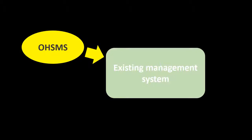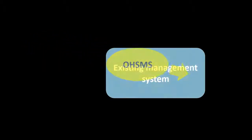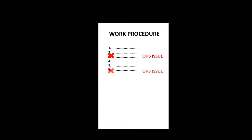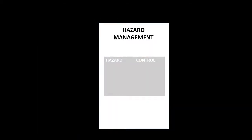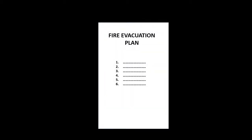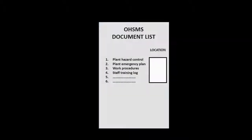The integration of an OHS management system into a company's existing management system is a complex process with many different aspects to it. Existing procedures are to be analysed from the perspective of work health and safety, with procedures modified where necessary. Designation of responsibilities are to be clearly outlined for accountability, and communication to the relevant staff of their responsibilities is to be conducted via training. Hazard management is a core component to the system, as are disaster contingency and response plans. A system of supporting documentation is to be created to aid with system monitoring and accountability.